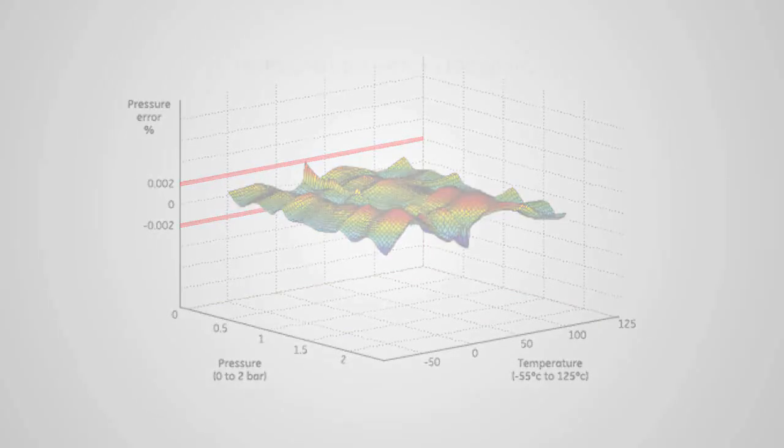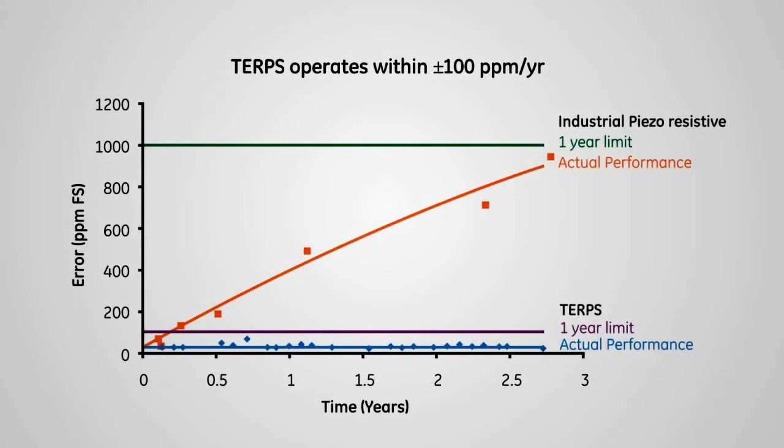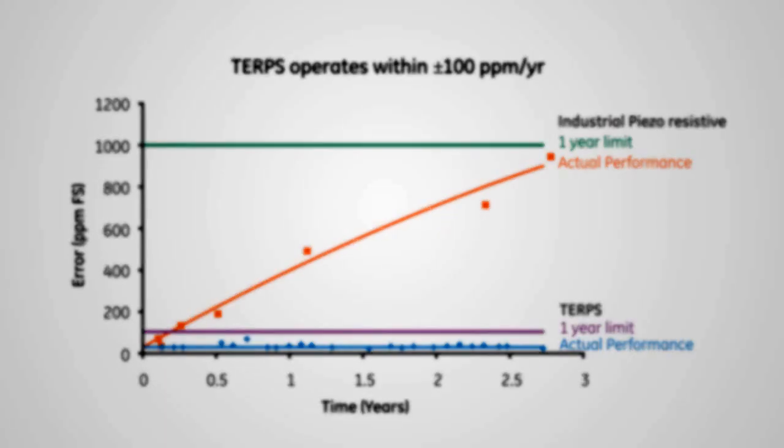Stability data over two years show that TERPS operates within plus-minus 100 ppm per year.